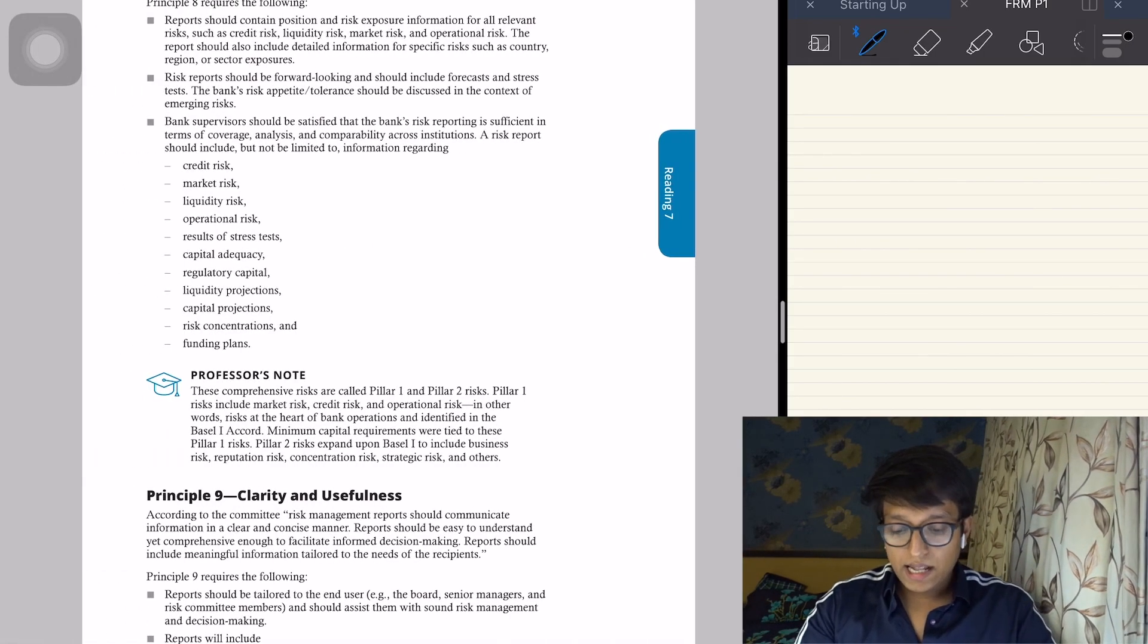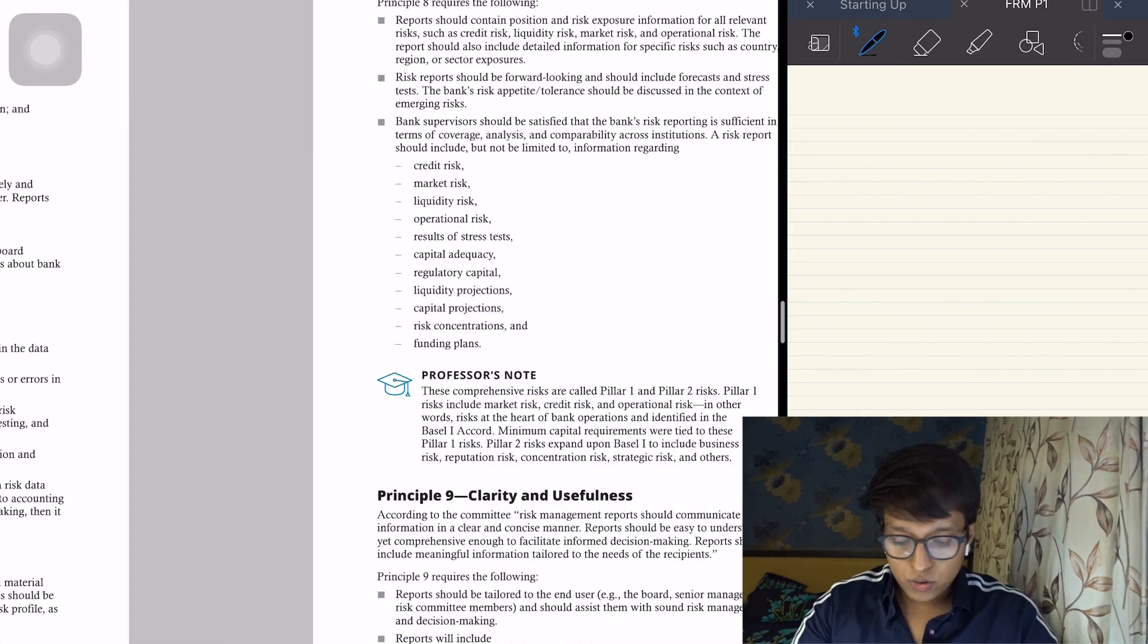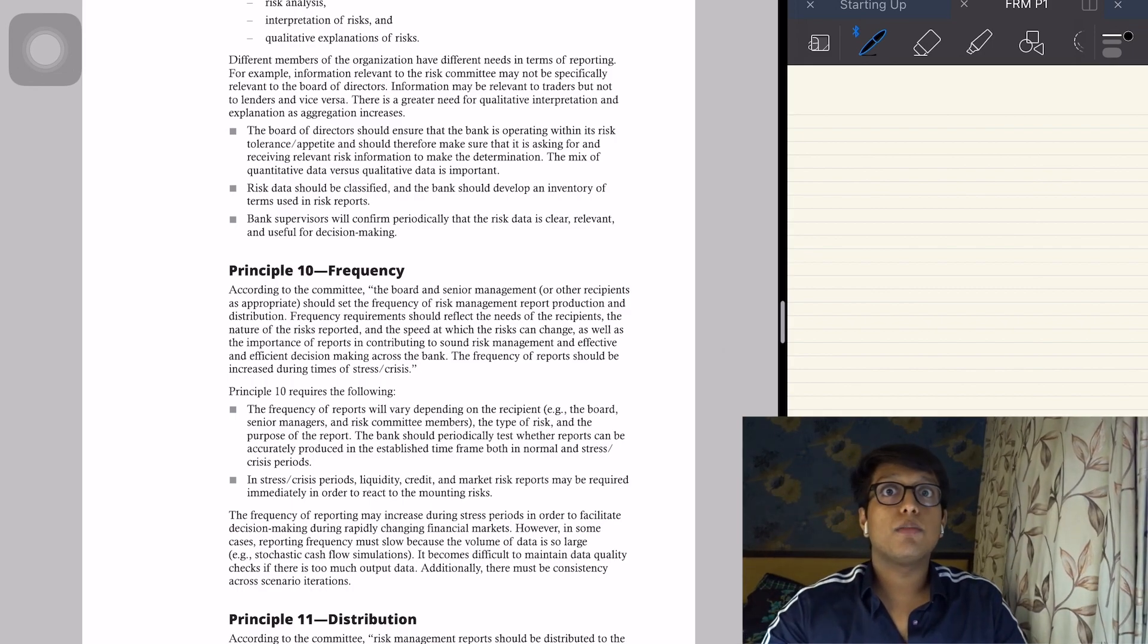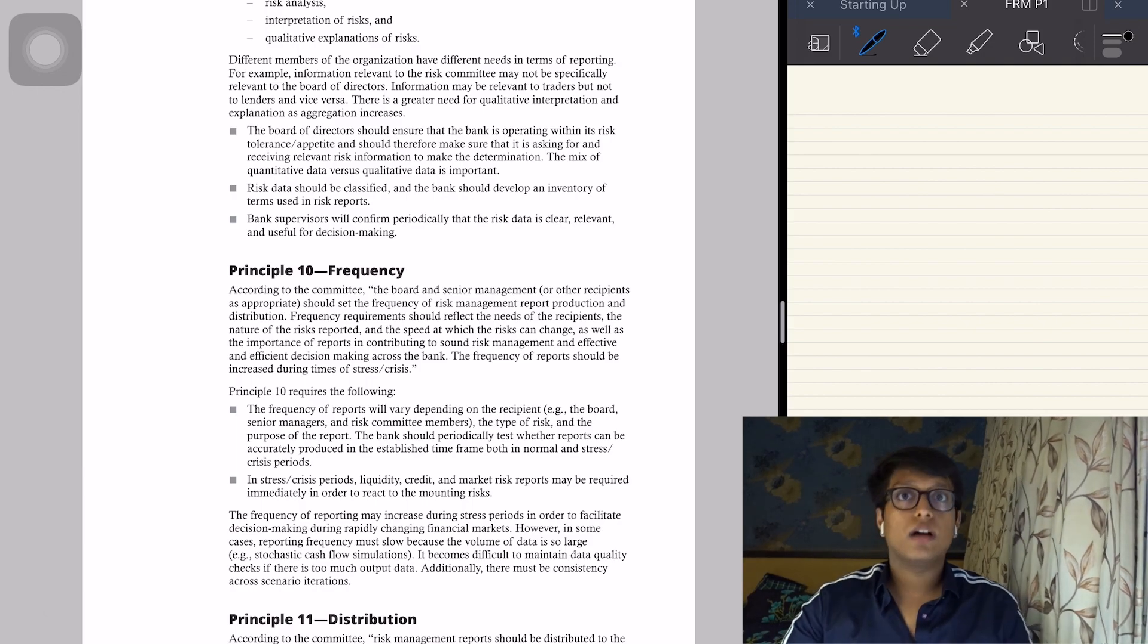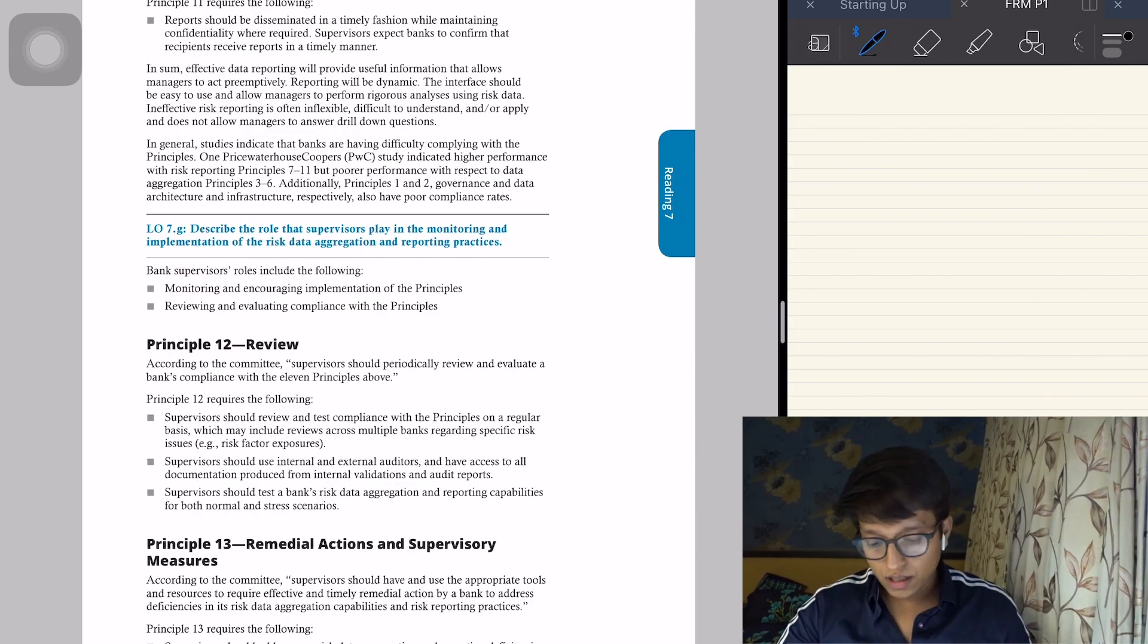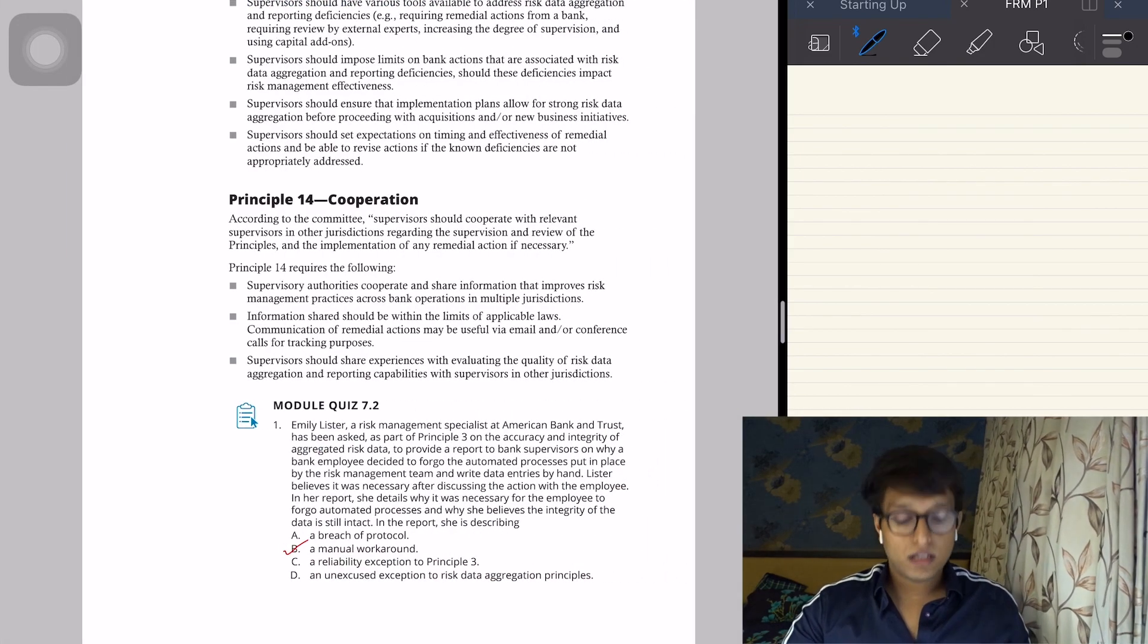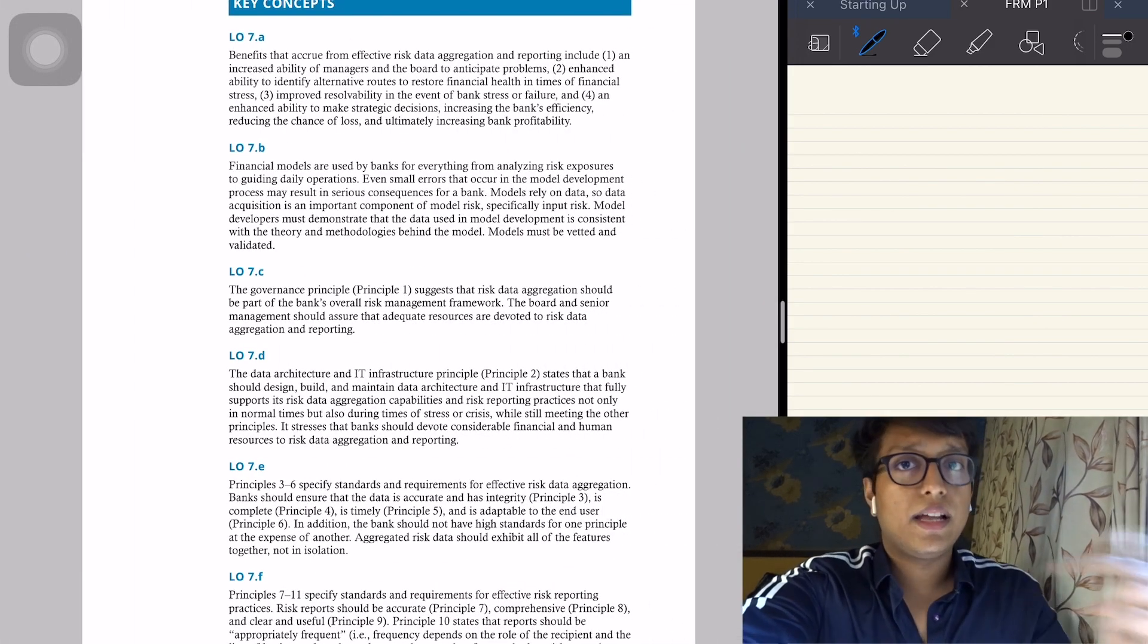They are simple words like frequency, clarity, usefulness, accuracy. You may think it's very simple, like accuracy means accuracy of data, usefulness means usefulness of data. But what is frequency? It's not frequency of data, it talks about the frequency of reporting the data. Then distribution, the data and the report should be distributed to which parties and how should they use it. Then remedial actions in case there are some issues and lastly cooperation between all the parties involved. Fairly simple, just go through it. Nothing much for me to teach here. I'll link it in comments.